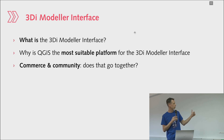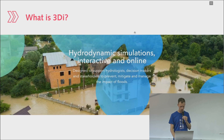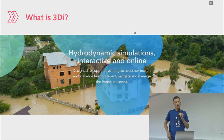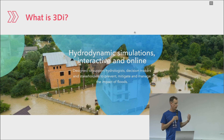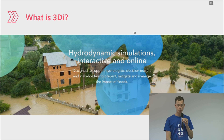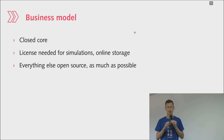I'd also like to explore whether it can work well to have a commercial product that is partly based on software developed through a lot of volunteer time in a free and open source way. So, 3Di is a hydrodynamic simulation software which allows you to do interactive and online simulations, aimed to support hydrologists and decision makers to make good decisions with regard to flood risks and other water management related problems.